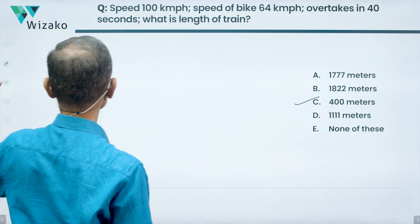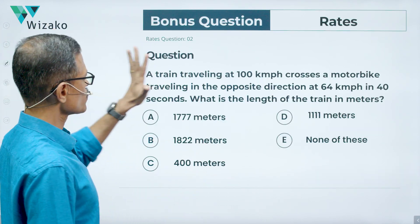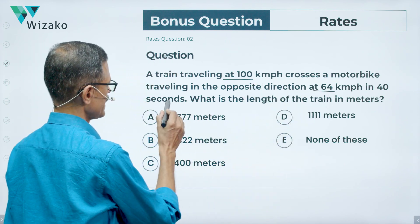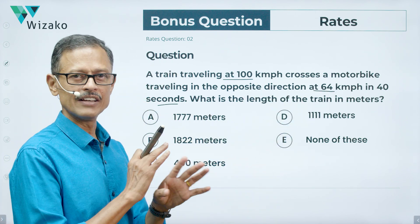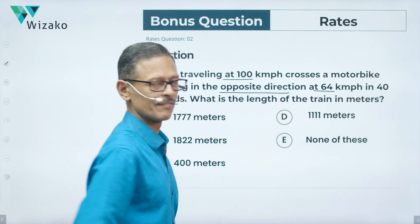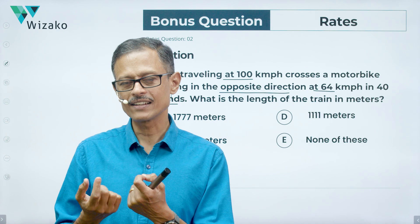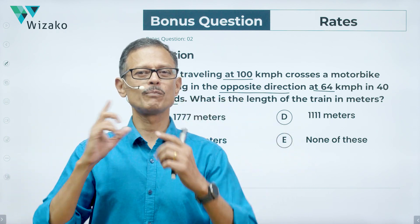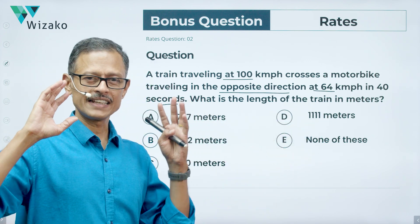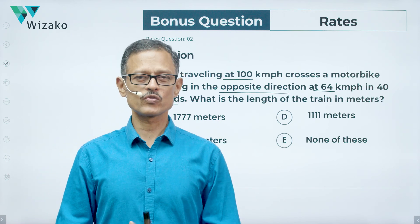Choice C (400 meters) is the correct answer. For the bonus question: everything is the same — train at 100 km/h, bike at 64 km/h, 40 seconds — but now they're traveling in opposite directions instead of the same direction. Adjust the relative speed accordingly and determine which answer choice is correct. Post your answers in the comment section. Best wishes for your GMAT!